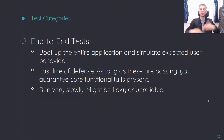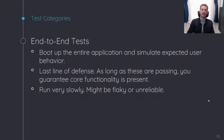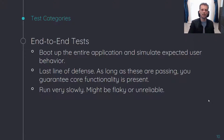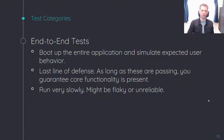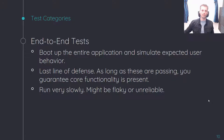End-to-end tests boot up the entire application and simulate an expected user's behavior. These are your last line of defense. As long as these are passing, you can be fairly confident that your application is going to behave as expected, at least for the functionalities that you are testing. These run very slowly and are probably going to be your flakiest and least deterministic tests.